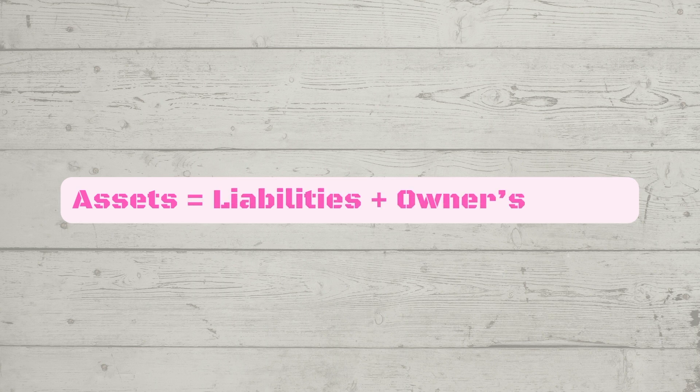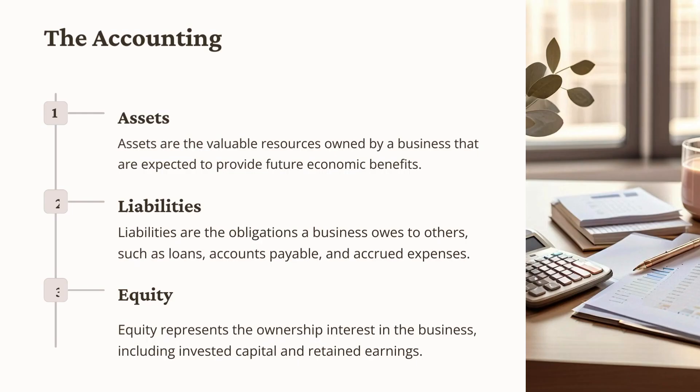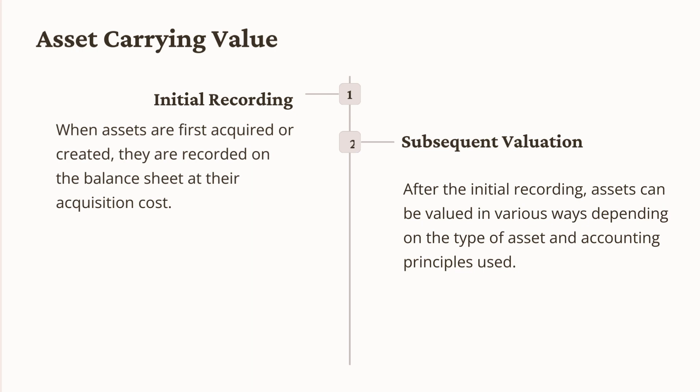Let's take a look at how these assets are presented on a balance sheet and discuss how assets are valued. Assets is the first section presented on a balance sheet, which follows the structure of the accounting equation: assets equals liabilities plus owner's equity. We know they are listed in order of liquidity, but how are they valued to accurately reflect their future economic benefits? When assets are first acquired or created, they are recorded on the balance sheet at their acquisition cost. After their initial recording, assets can be valued in various ways depending on the type of asset and accounting principles used.